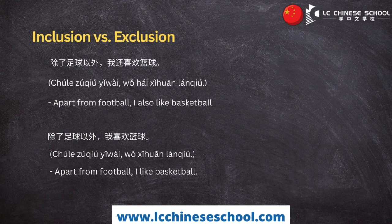Without 还 or 也, 除了…以外 tends to exclude the element mentioned after 除了, emphasizing what follows 以外. For example: 除了足球以外，我喜欢篮球 (chúle zúqiú yǐwài, wǒ xǐhuān lánqiú). It means 'Apart from football, I like basketball.' The focus is on basketball, excluding football from the speaker's interest.